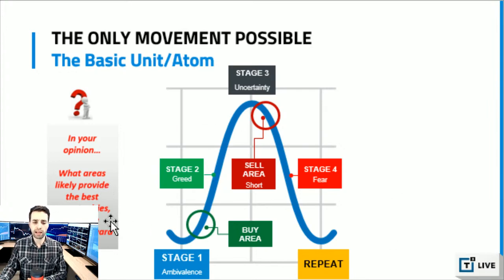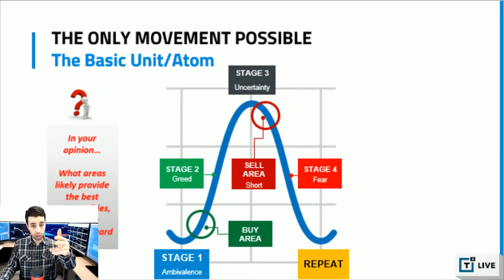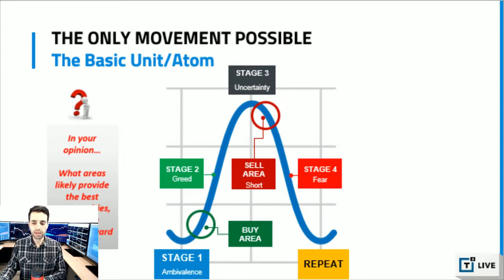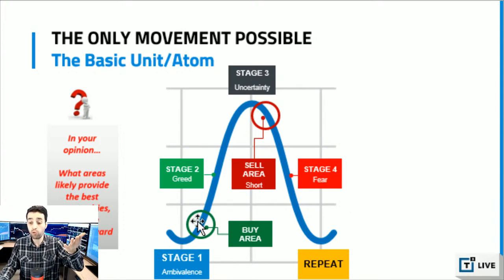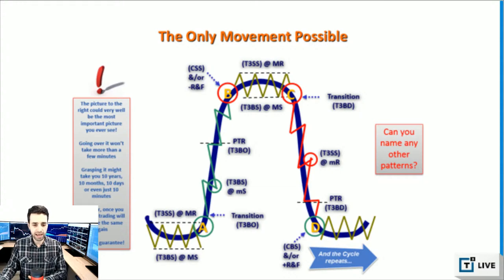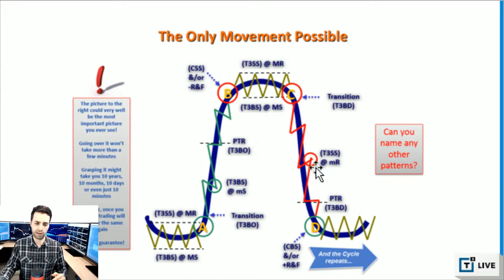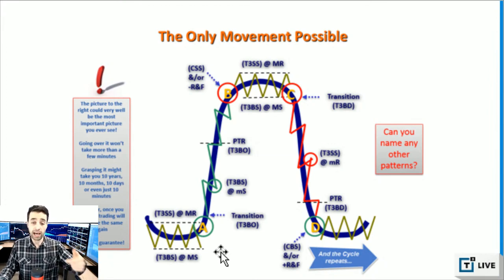In your opinion, what areas on this chart provide the best opportunities with the highest reward-to-risk? Audience answers: stage 2, stage 4, above stage 1 (the breakout), and below stage 3. All correct. As a swing trader, I have two strategies not listed here: earnings plays and gap plays. Those are the only two things not listed that I also do.